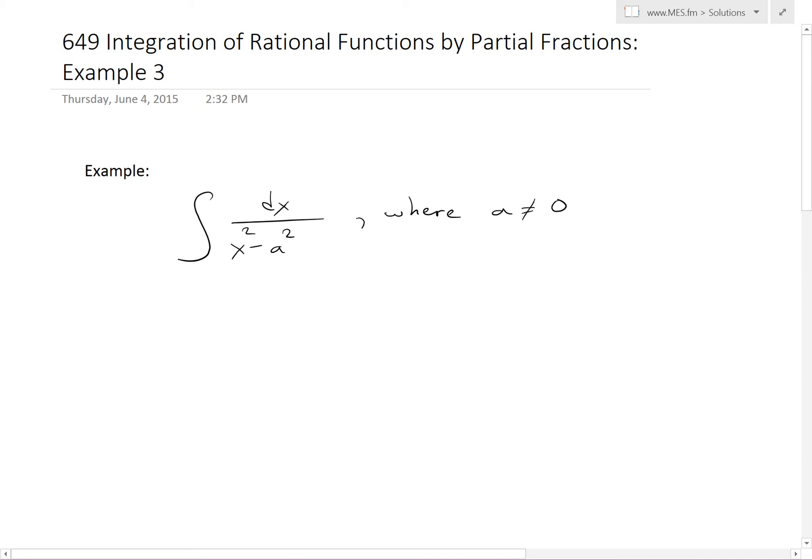Hi everyone, it's Math Easy Solution. Today we're going to discuss further into integration of rational functions by partial fractions and go over example three, which states: find the integral of dx divided by x squared minus a squared, where a is not equal to zero.